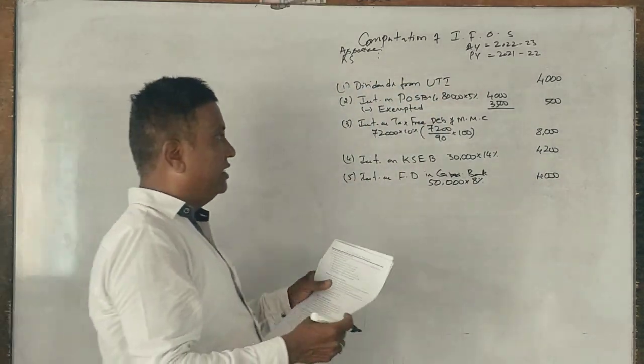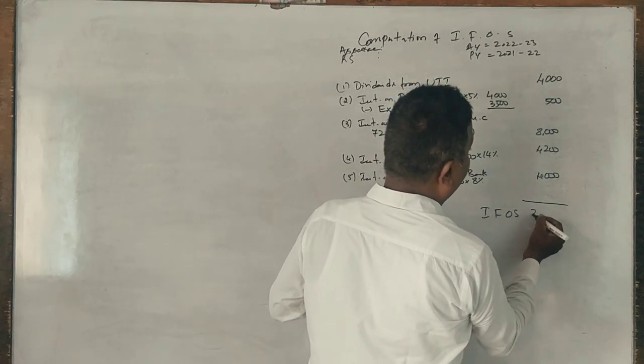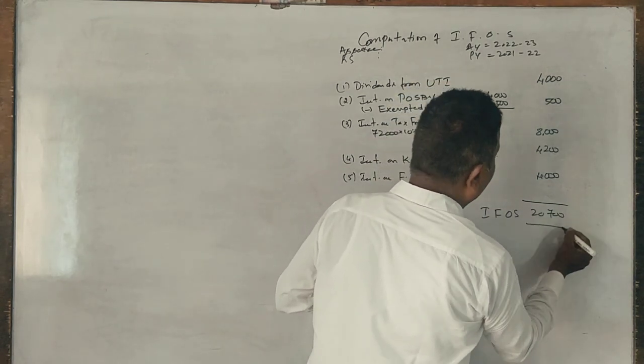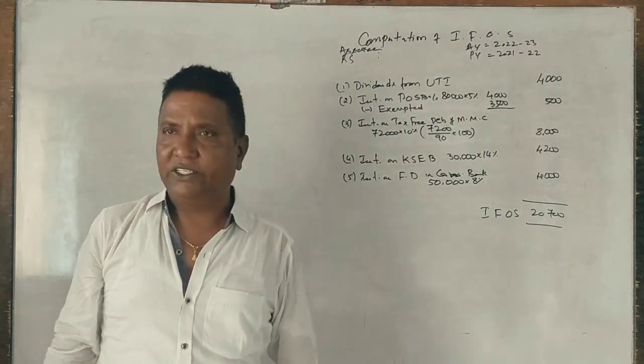Total income: 20,700. This problem is finished within three to four minutes.